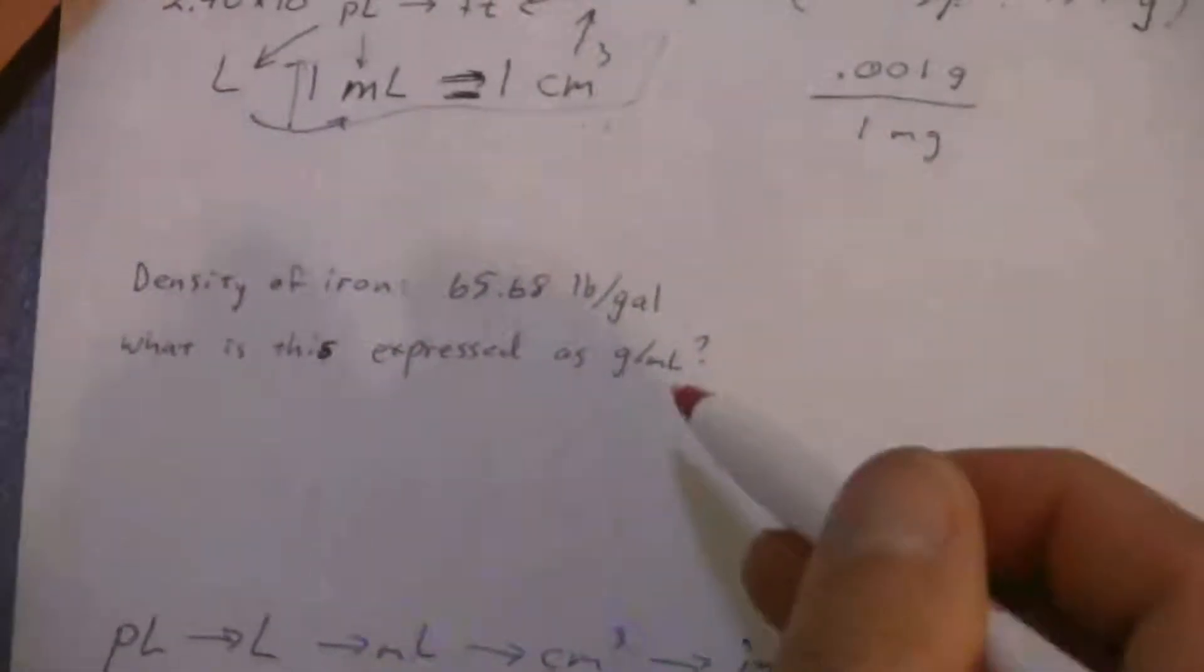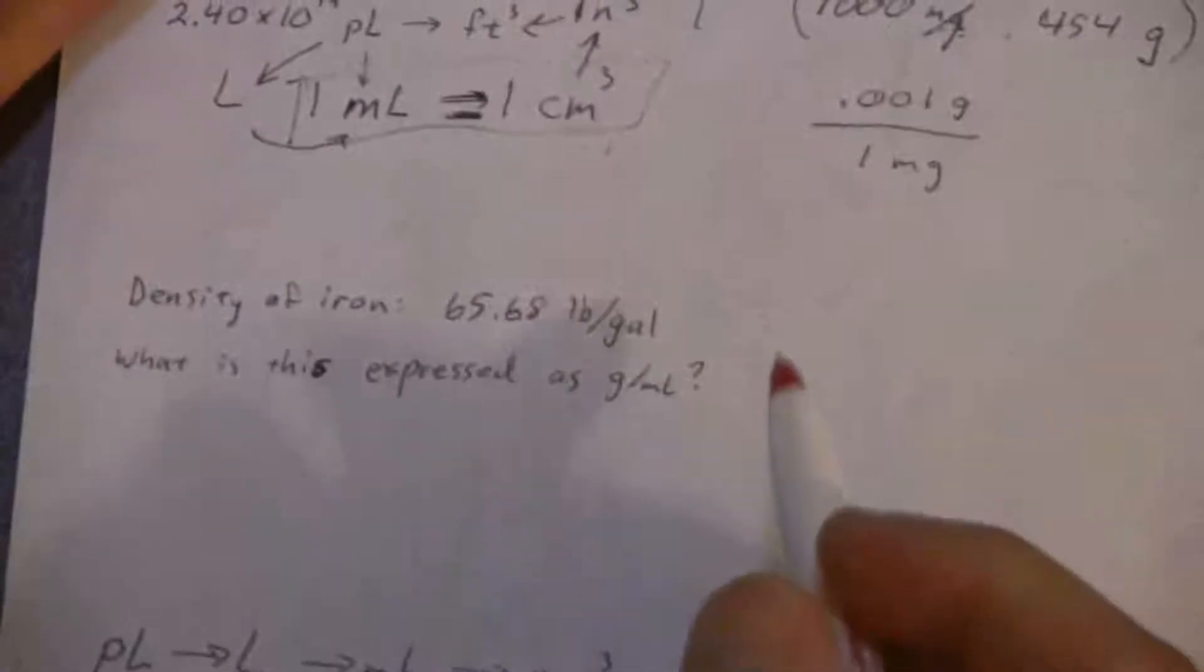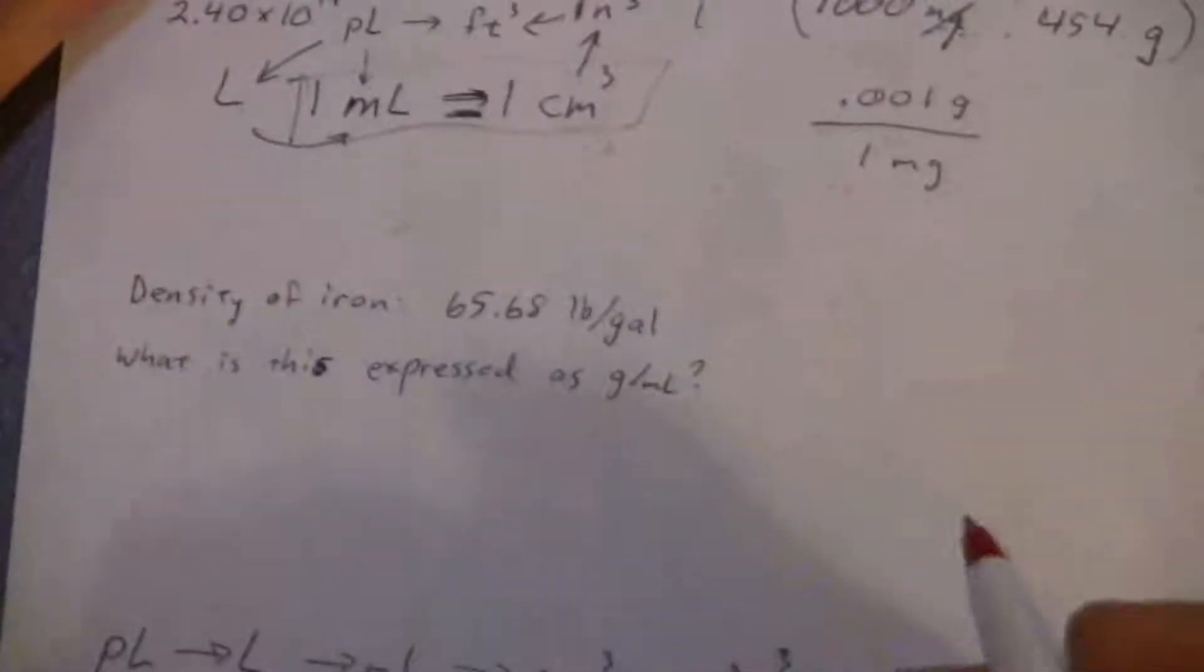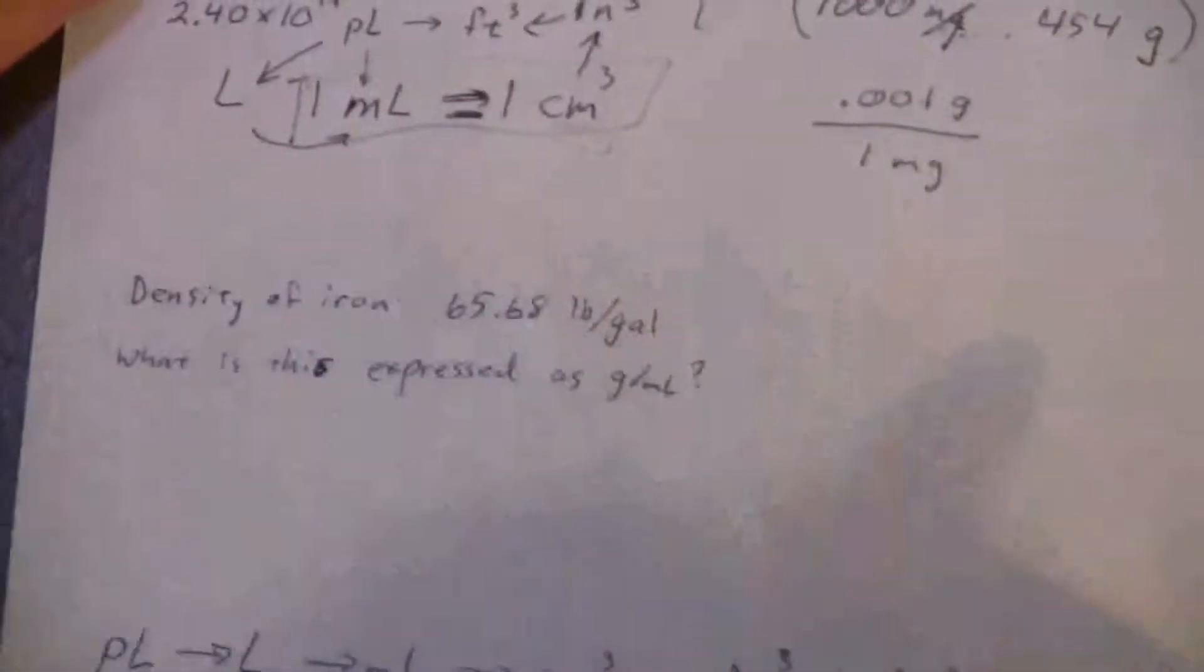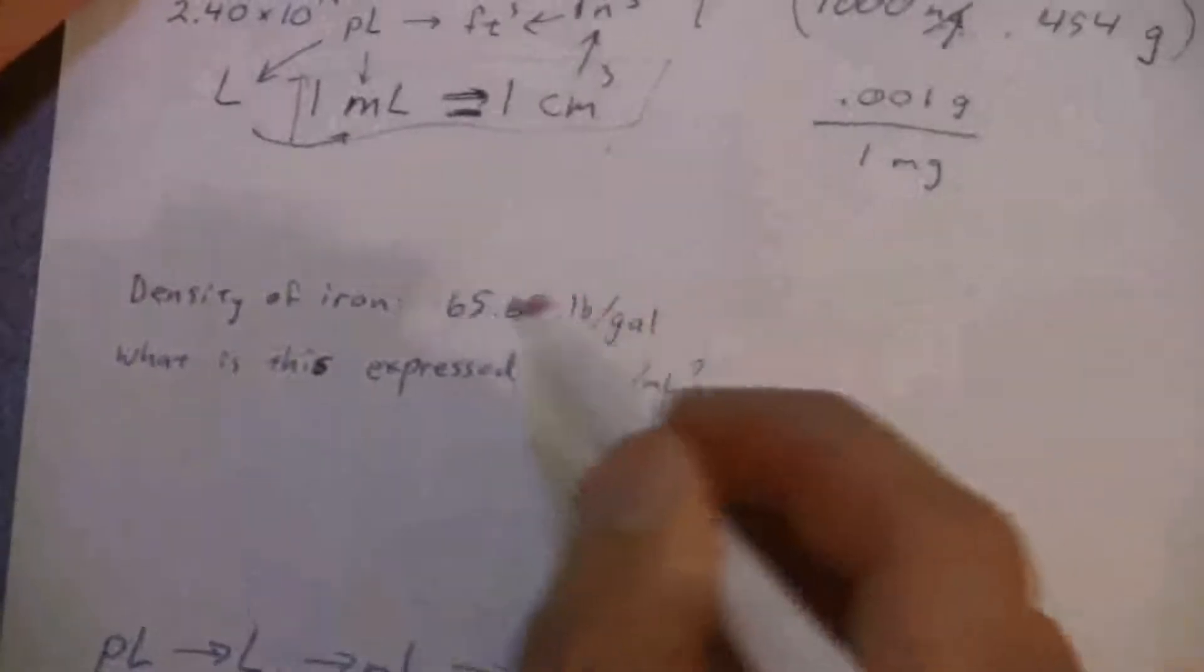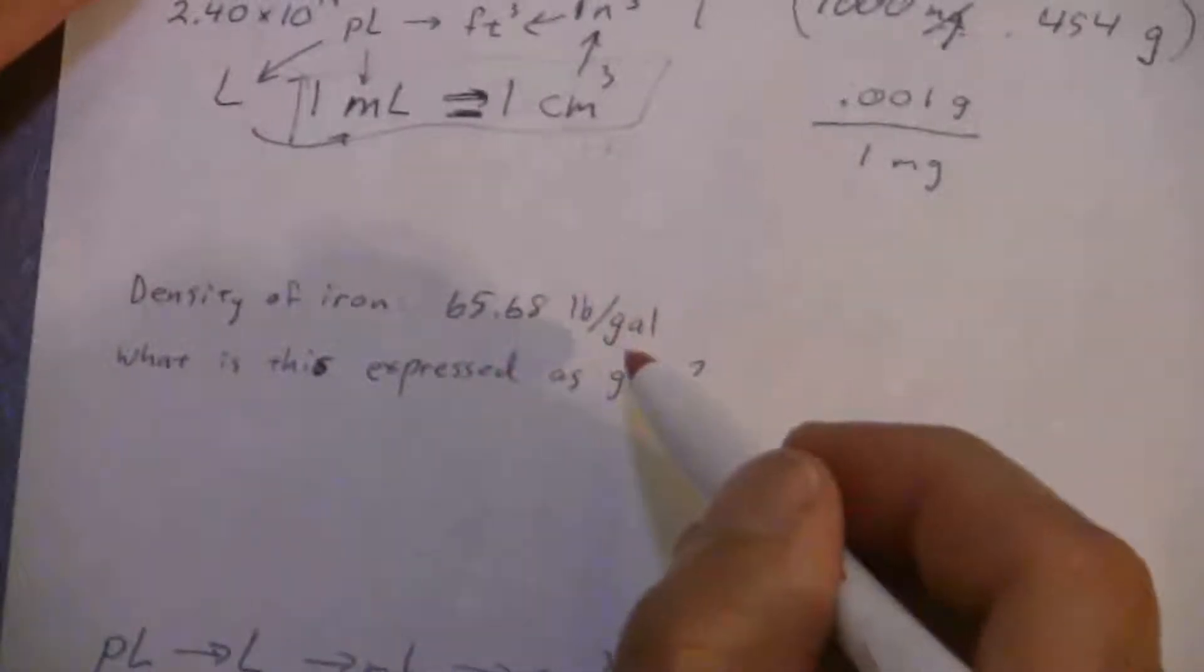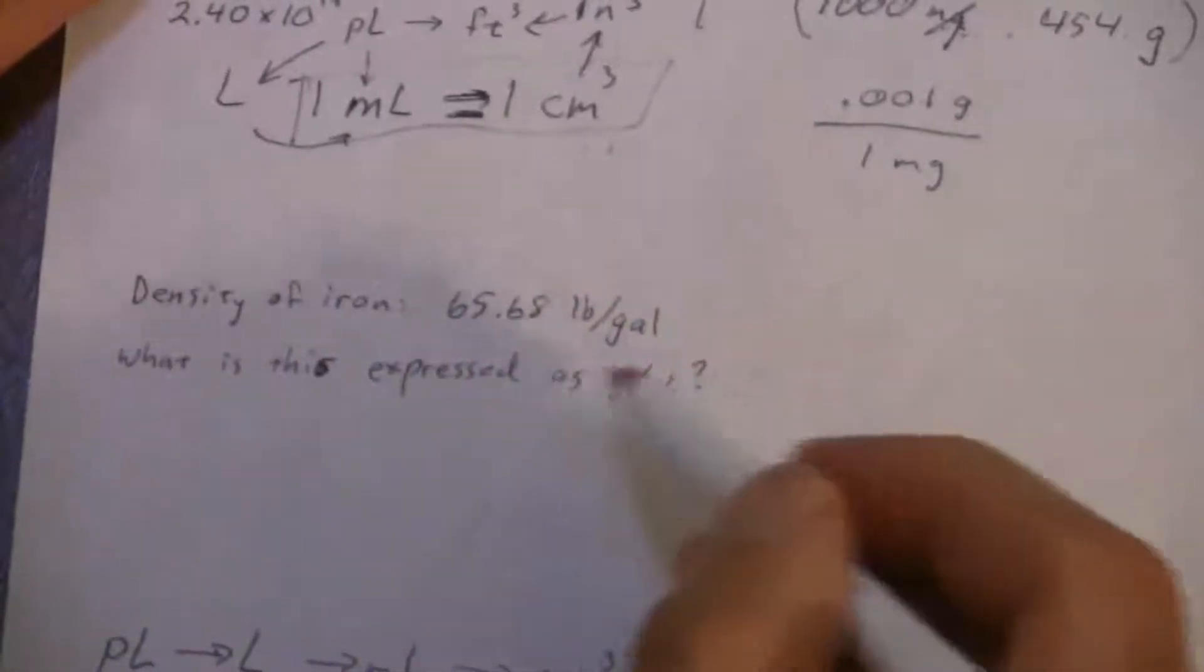Let me go ahead and do this one last problem. This is a double unit conversion. It says the density of iron is 65.68 pounds per gallon. Pounds per gallon is actually a commonly used unit for density in the English system.